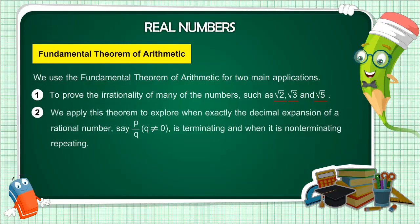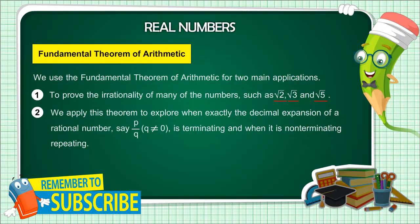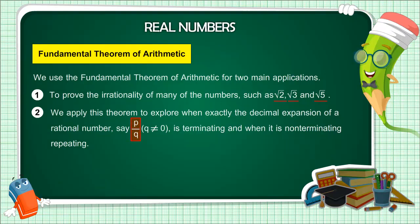Second, we apply this theorem to explore when exactly the decimal expansion of a rational number, say p by q, where q is not equal to 0, is terminating and when it is non-terminating repeating.